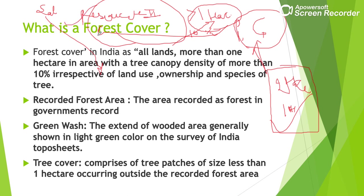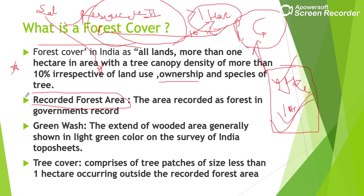So a small science-related point to remember: ResourceSat-2 is used to collect this data via remote sensing techniques. The land ownership for forest cover can be anything — private, government, or community.